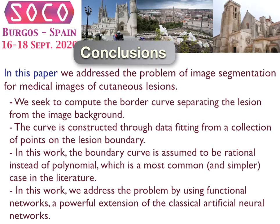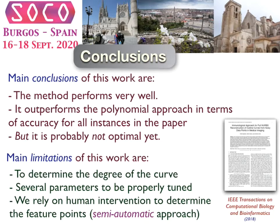In conclusion, in this paper we address the problem of image segmentation for medical images of cutaneous lesions, in particular melanoma. We seek to compute the border curve separating the lesion from the image background, constructed through data fitting from a collection of points lying on the lesion boundary. The boundary curve is assumed to be rational rather than polynomial, which is the more common but simpler case in the literature. We use functional networks, a powerful extension of classical artificial neural networks, and the method outperforms polynomial fitting, clustering, thresholding, and multilayer perceptron neural networks in terms of accuracy for almost all instances.